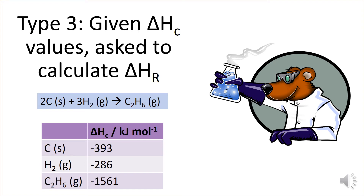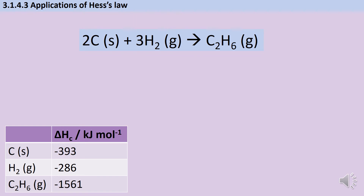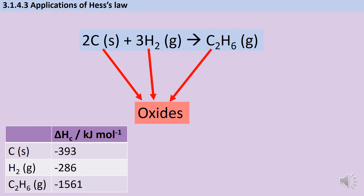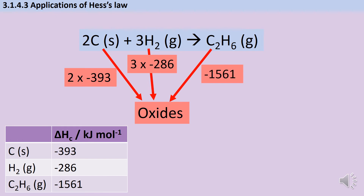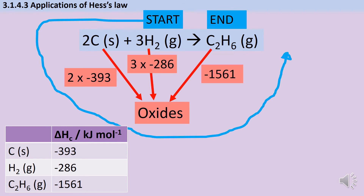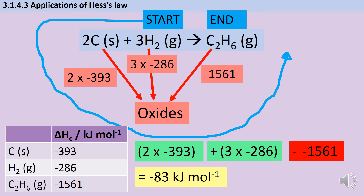You could also be asked to work out the overall enthalpy for a reaction — this is really what we were doing with the carbon monoxide question, except in that example the reaction was a formation reaction. Here we have carbon reacting with hydrogen to make ethane. They will have to give me a symbol equation for this type of question. I need one arrow from each species to its oxides; I use a box labelled 'oxides' rather than spending time working them out. I add two lots of minus 393 for carbon, three lots of minus 286 for hydrogen, and minus 1561 for ethane. Following the arrows — correct direction for the first two, reversed for ethane — gives a final value of minus 83 kJ/mol.